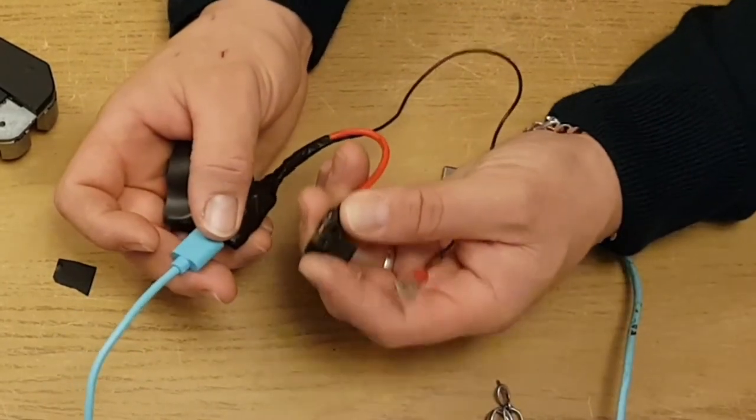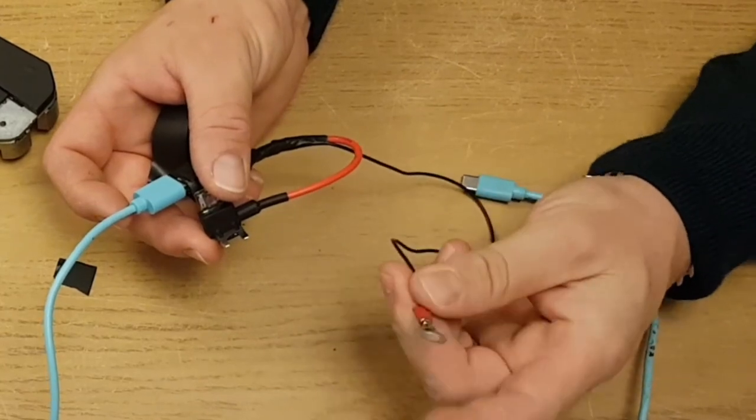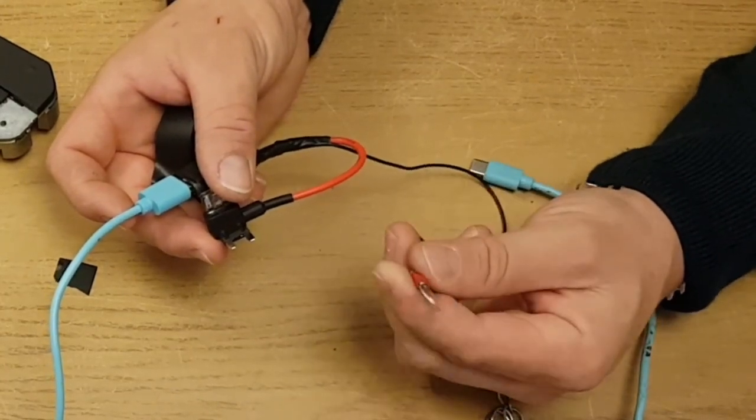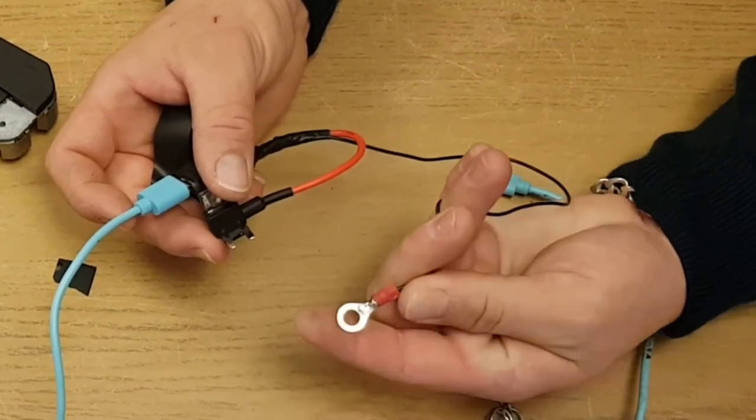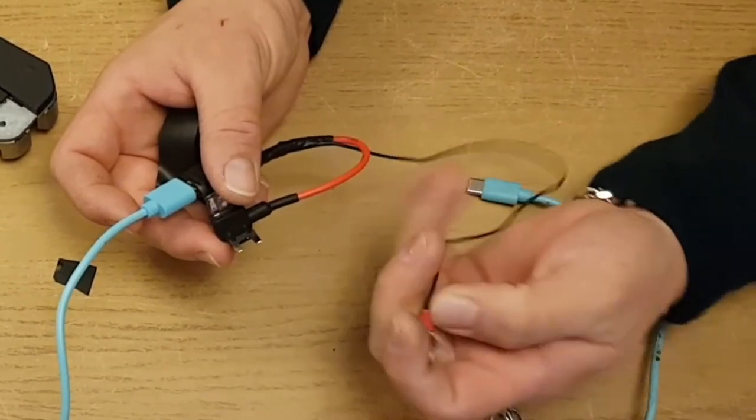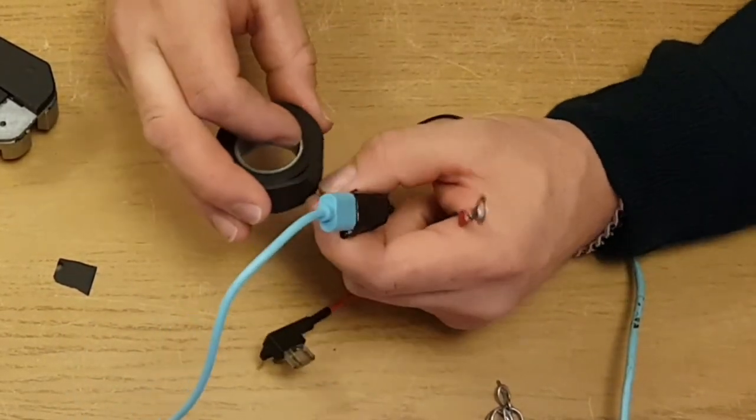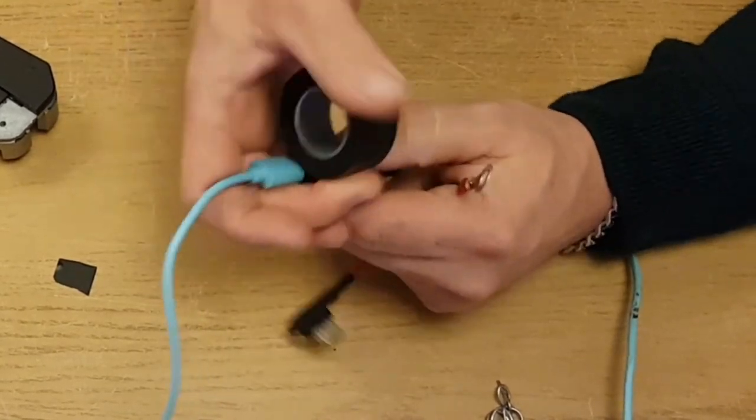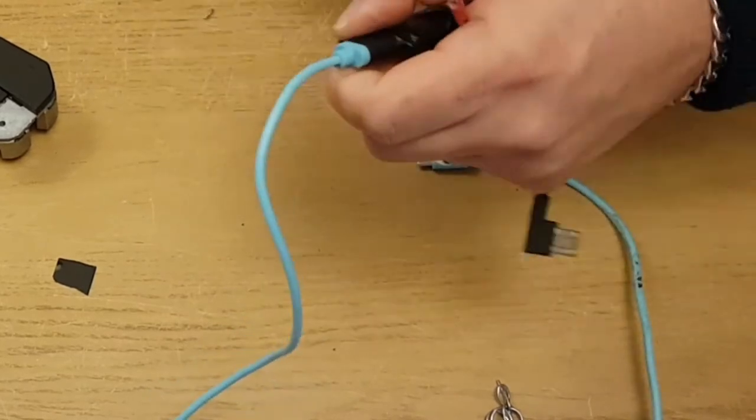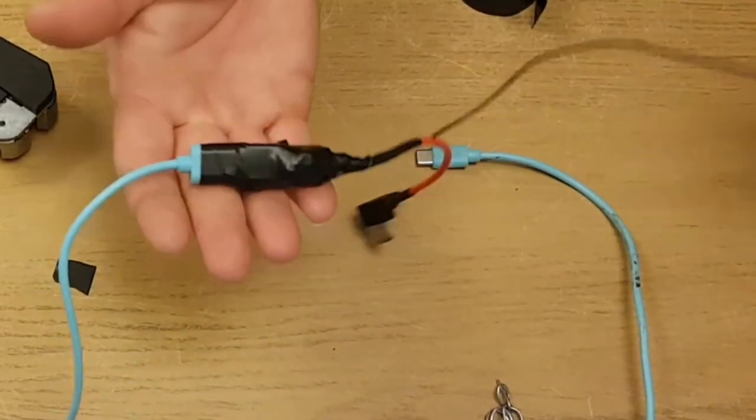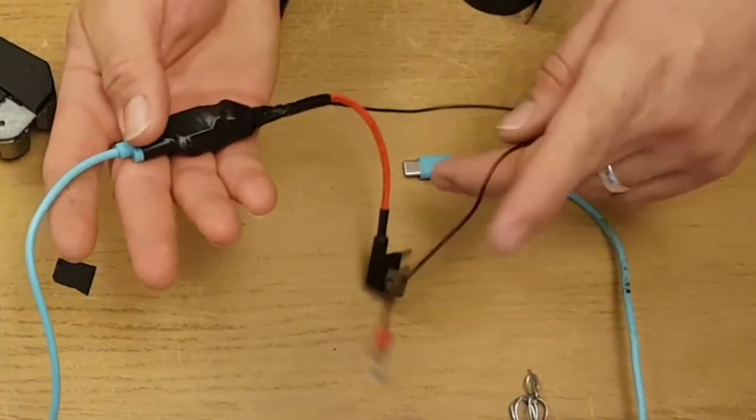And then you'll earth this up to anything under the dashboard that's a bolt that earths to the chassis. If not you can use a tech screw and screw that into the chassis to earth it. And if you want to you can always wrap some tape around this part here to then make sure that the USB lead doesn't come out. And that is how to hardwire your dash cam for a total of about three pounds.